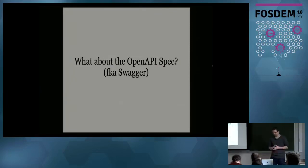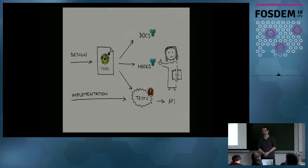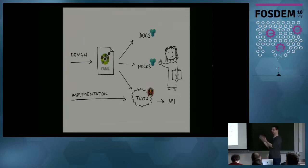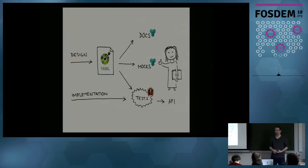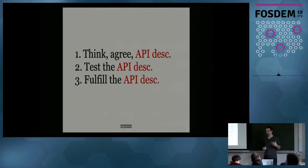You may ask: what about the OpenAPI spec, formerly known as Swagger? It works the same way — instead of API Blueprint, you use the Swagger spec. But it's YAML-based or JSON-based, and I don't think it really fits the design-first or document-first scenario. But it's up to you.